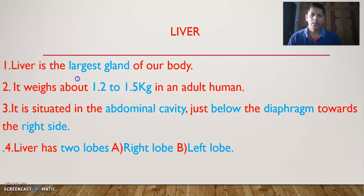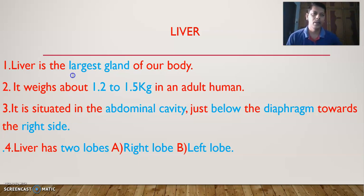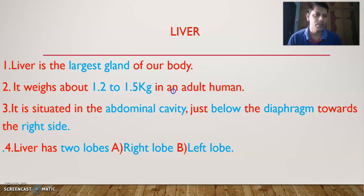Liver is the largest gland in our body. It weighs about 1.2 to 1.5 kilograms in an adult human being — that is 1,200 grams to 1,500 grams.